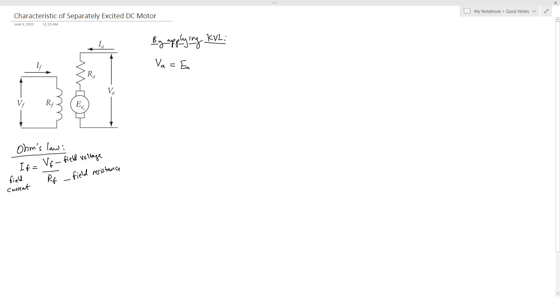So EA plus RA times IA. You remember last time we said that some equations will be required. So here we can recall EA, which was also EB in the last video, equals K Phi Omega, which is also equal to D IF Omega.